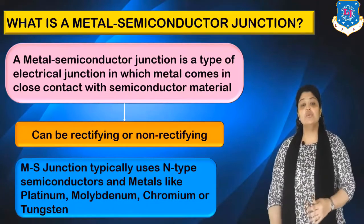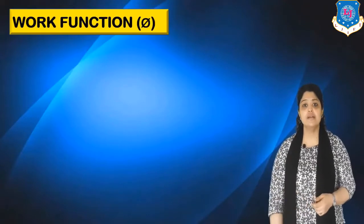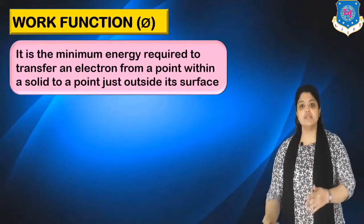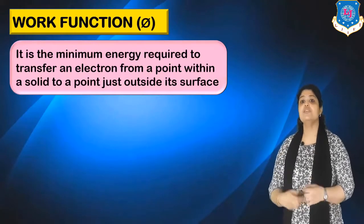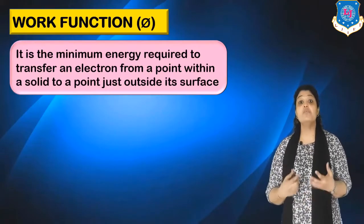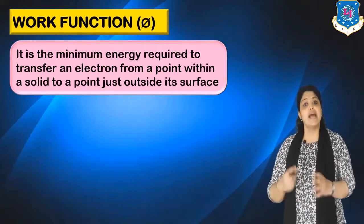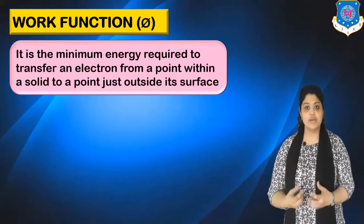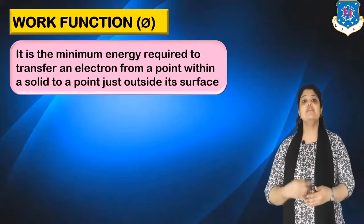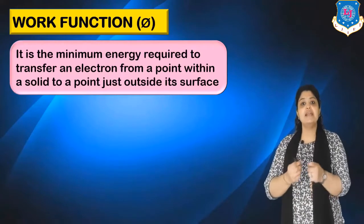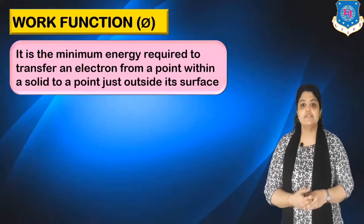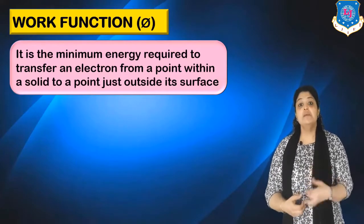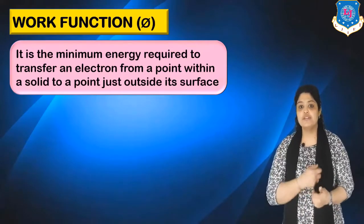Before moving on to the categories of metal semiconductor junctions, let us discuss two important related terms. The first is work function, denoted as phi (φ). It is the minimum energy required to transfer an electron from a point within a solid to a point just outside its surface. That minimum energy is known as the work function.